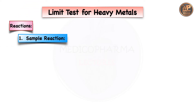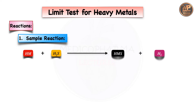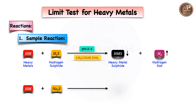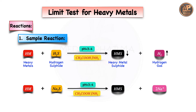For the sample reaction: heavy metal (HM) reacts with hydrogen sulfide (H₂S) to give heavy metal sulfide (HMS) plus hydrogen gas (H₂), at pH 3–4 adjusted with acetic acid and ammonia. Also, heavy metal reacts with sodium sulfide (Na₂S) to produce heavy metal sulfide plus sodium ions (2Na⁺), again at pH 3–4 adjusted with acetic acid and ammonia.